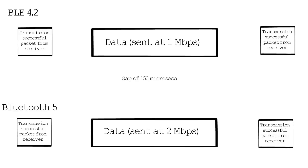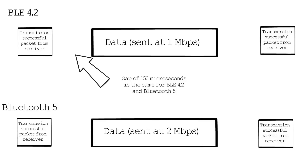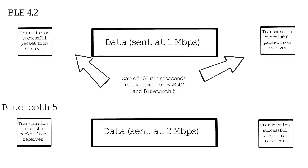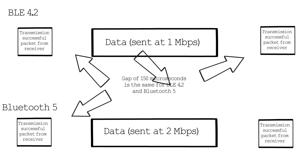Now it doesn't mean you'll actually get two megabits per second of data, because there are gaps between packets that are sent — those gaps are of a defined size — and the gap between packets has remained the same from Bluetooth 4.2 to Bluetooth 5. So the overall speed is actually about 1.7 times faster.